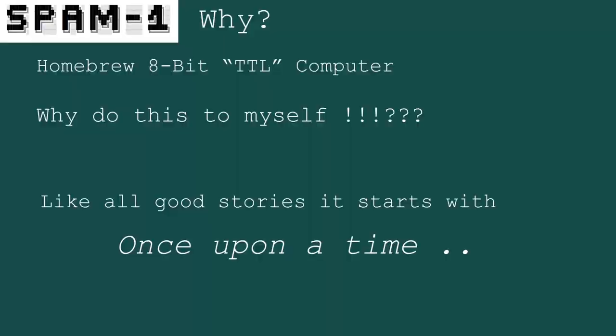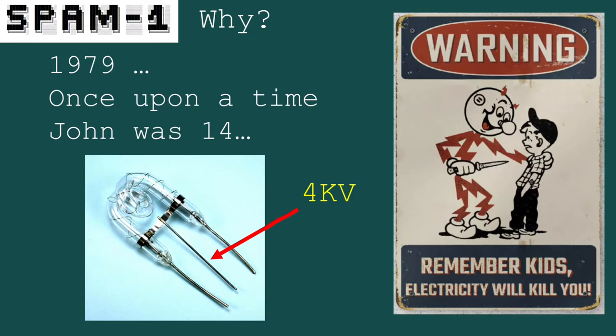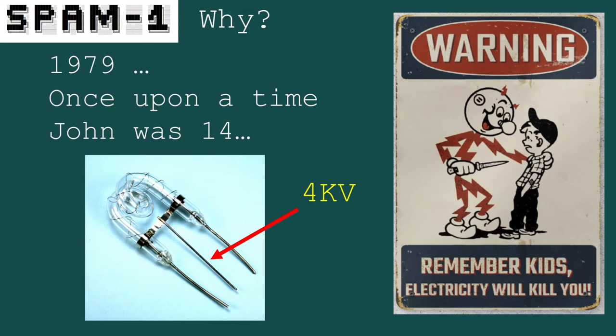You wouldn't do a project like this if it wasn't personal, and like all good stories it starts with 'once upon a time.' Young Johnny at 14 was making home digital electronics projects using those 7400 chips, but also doing high-voltage electronics — building strobe lights using a transformer to bump UK mains voltage from 240 volts up to about 4,000 volts. Little Johnny clearly wasn't getting enough adult supervision. Luckily, the Grim Reaper decided not to prune Johnny from the gene pool.